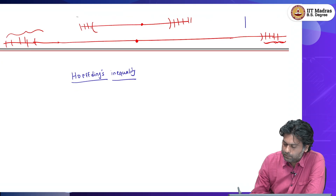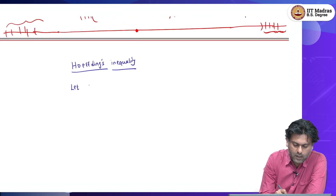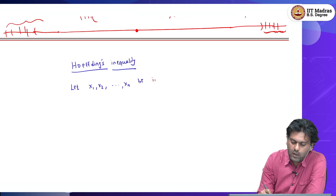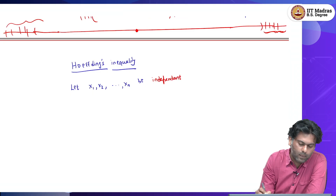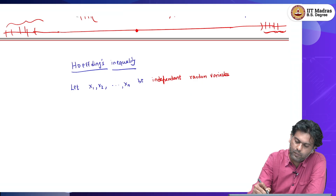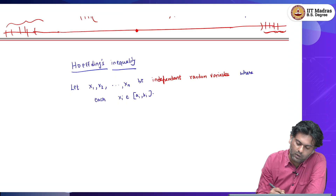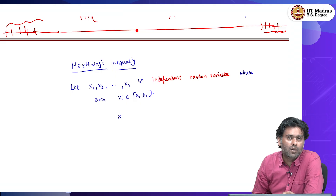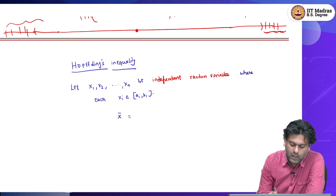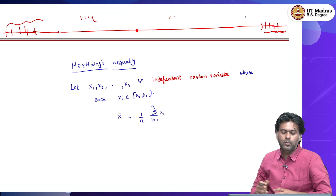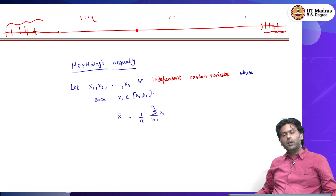So what is Hoeffding's inequality? Hoeffding says: let x1, x2, ..., xn be independent random variables, where each xi belongs to some range [a_i, b_i]. You have n different independent random variables, and x-bar is just the average of these random variables. This is a new random variable created from x1 to xn.